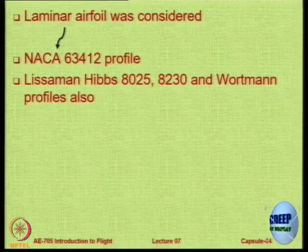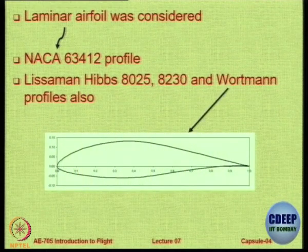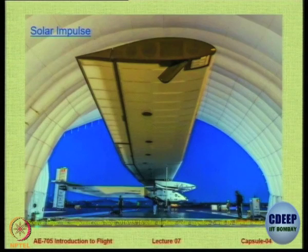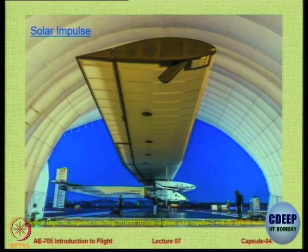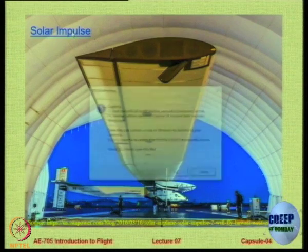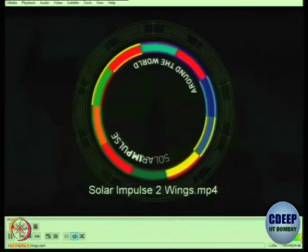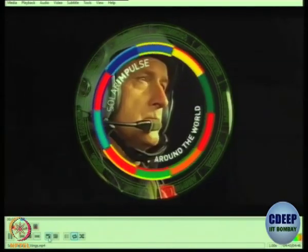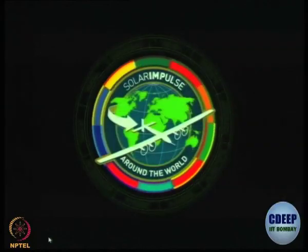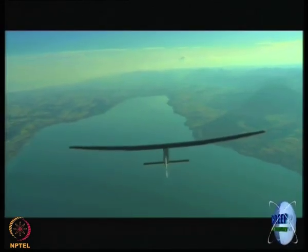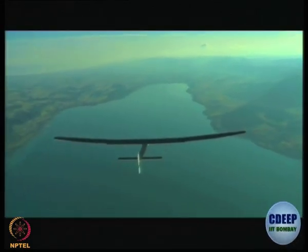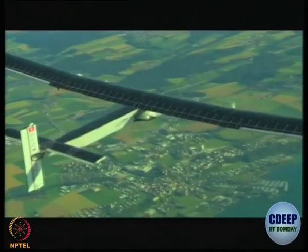Starting from laminar flow aerofoils, the recent example is the aircraft called Solar Impulse. It has a wingspan larger than a Boeing 747 — 72 meters long — covered in solar cells, ultralight, and allowing Solar Impulse to fly day and night.